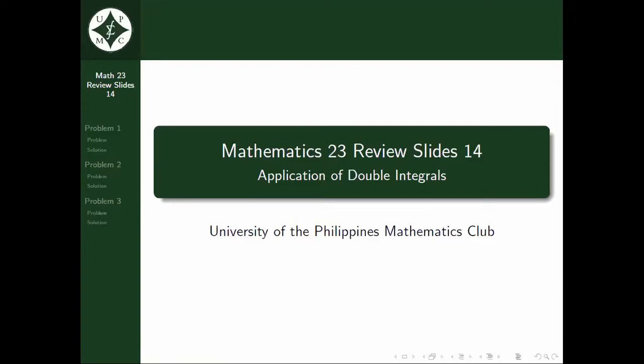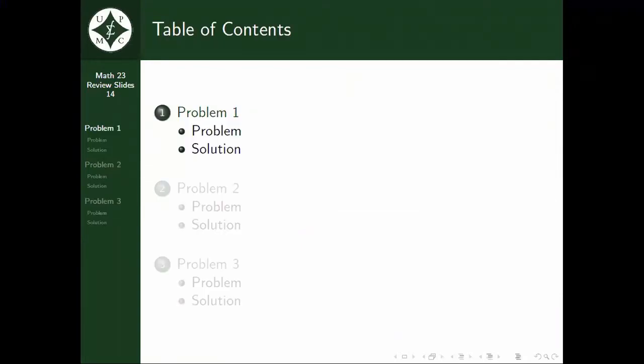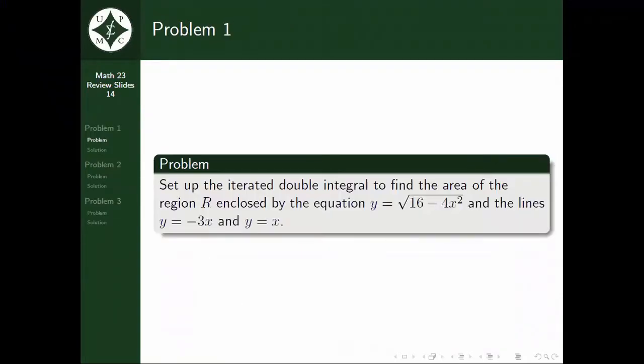Moving on to the first problem. We have to set up the iterated double integral to find the area of the region R, enclosed by the equation y is equal to the square root of 16 minus 4x squared, and the lines y is equal to negative 3x and y is equal to x.